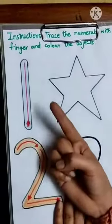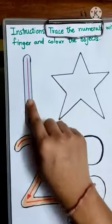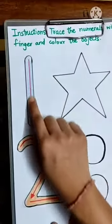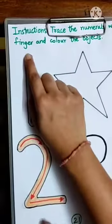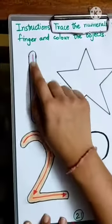First, take your index finger and then trace like this. 1. Make a standing line and that's 1.